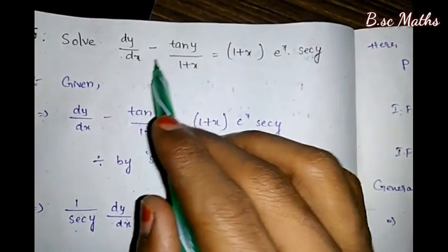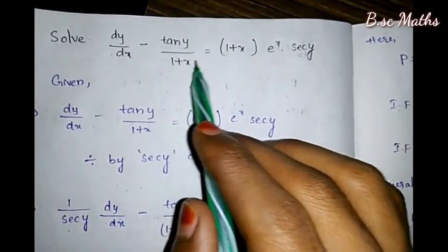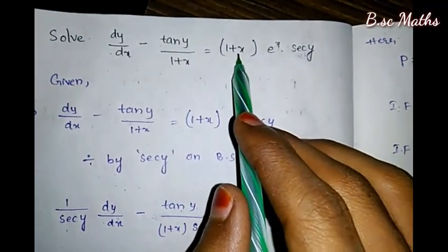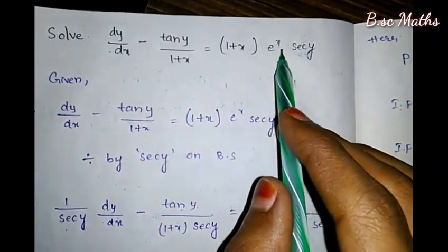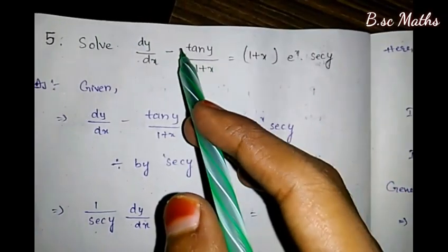Solve dy/dx minus tan(y)/(1+x) equals (1+x)·e^x·sec²y. We have the question here.